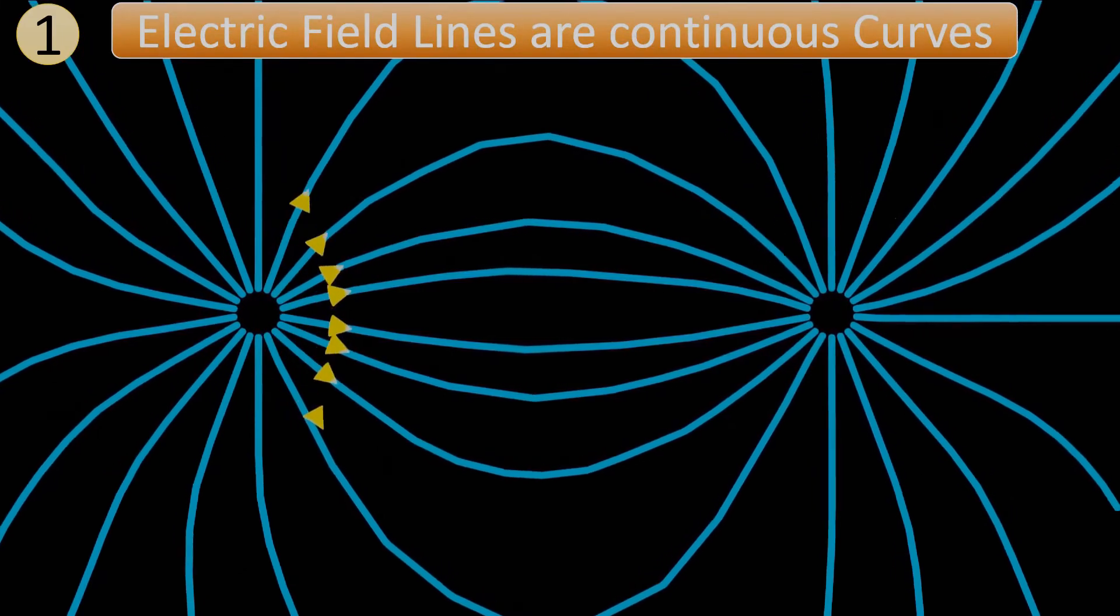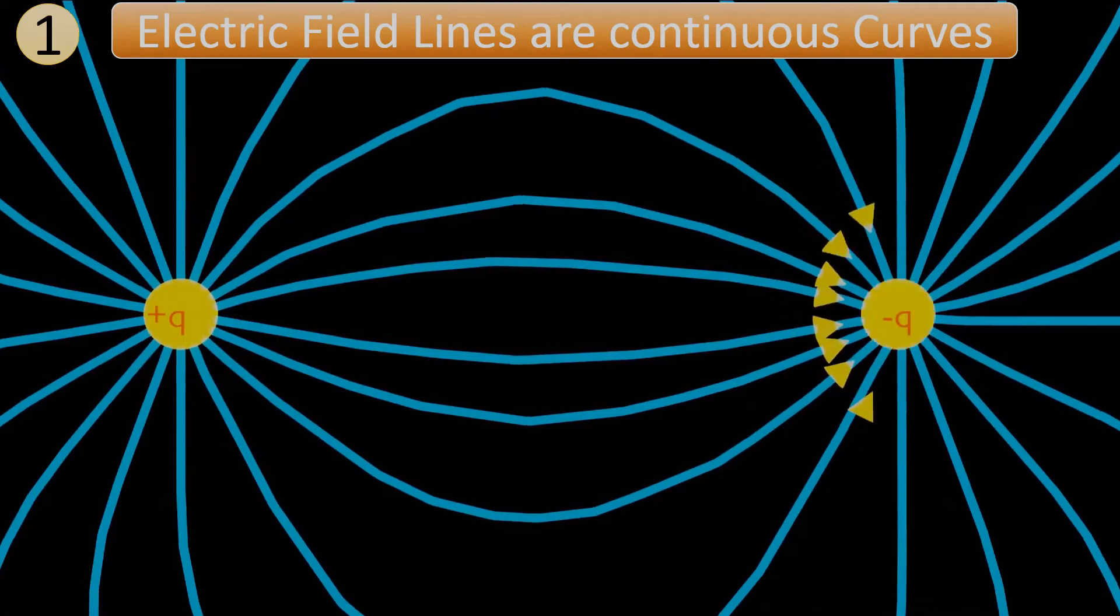First, electric field lines are continuous curves that start from a positive charge and end at a negative charge.